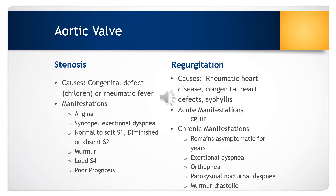Aortic valve stenosis in children is typically due to a congenital defect. In adults, aortic stenosis is the result of rheumatic fever. Aortic stenosis causes obstruction of flow from the left ventricle to the aorta during systole. The left ventricle hypertrophies and there is increased myocardial oxygen consumption because of the increased myocardial size. As the disease progresses and compensatory mechanisms fail, there is reduced cardiac output, leading to decreased tissue perfusion, pulmonary hypertension, and heart failure.